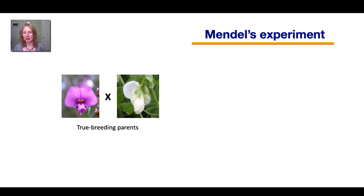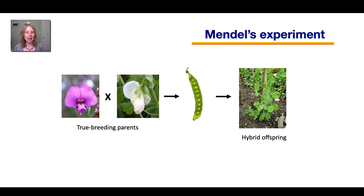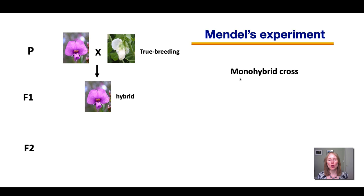So now we get to the gist of Mendel's initial experiments. For those initial experiments, he would take two different true breeding plants that differed in just one character, such as flower color. So one was true breeding for purple, the other for white flowers, and in all other characters they were the same. He used one as the father and one as the mother, and crossed them to produce the babies — the hybrid offspring, a hybrid because they are a mixture of two different parents. This first type of cross was known as a monohybrid cross. Mono means one — the parents differed in just one character.